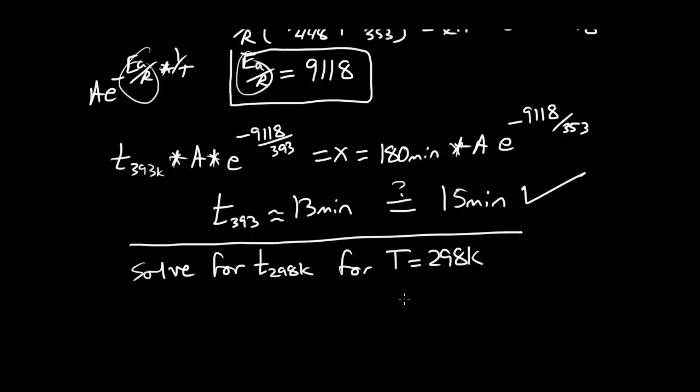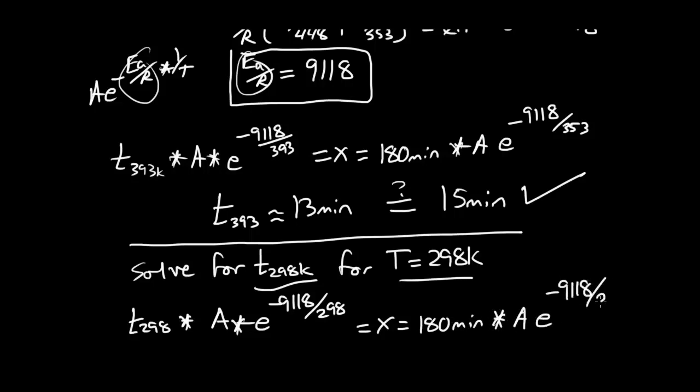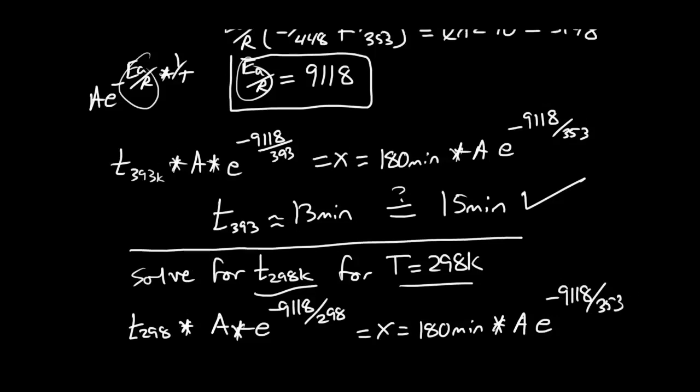How long will it take to drive the reaction to completion at room temperature? We'll use the same equation we had here, so the time 298 times A times e to the minus 9118 over this case 298 equals X equals 180 minutes times A, e to the minus 9118 over 353. Let's scroll down.